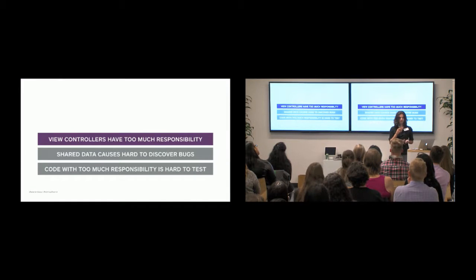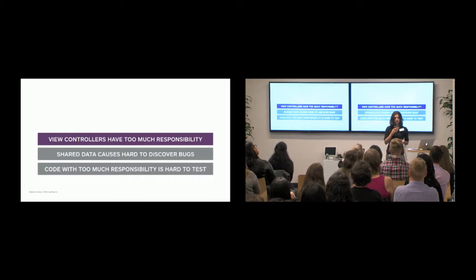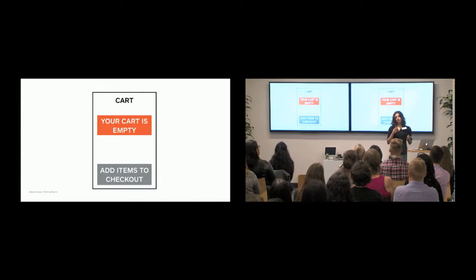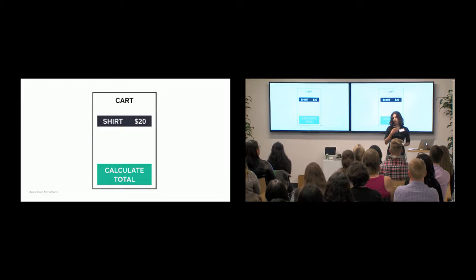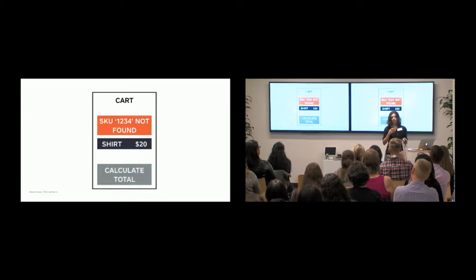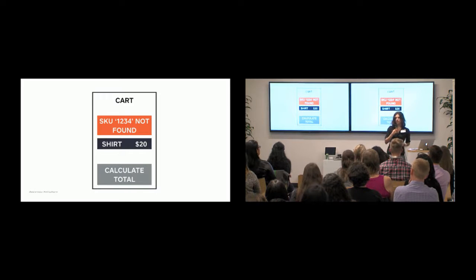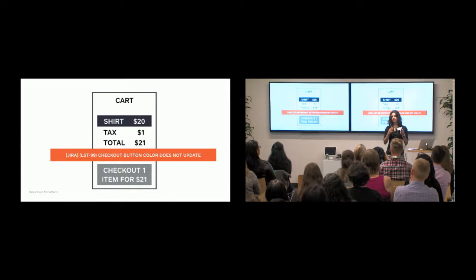The first piece is it's easy for view controllers to have too much responsibility and get bloated. Let's walk through an example of adding items to a cart and see how this plays out. We start out with a cart — it's empty, it's got an error state, and the checkout button is disabled. Then if we add an item to the cart, we have to update a lot of states: add the item, enable the checkout button, change the checkout button color, and so forth. It's really easy to forget one of these things, and this leads to bugs.